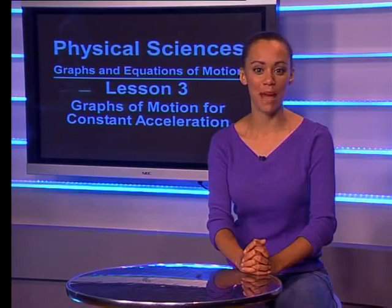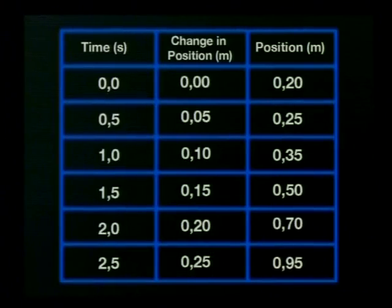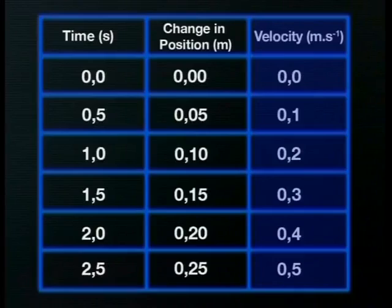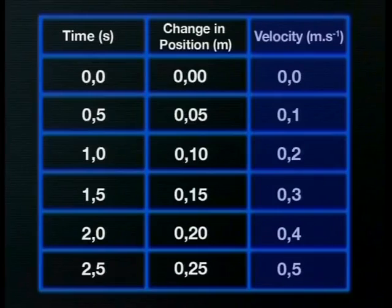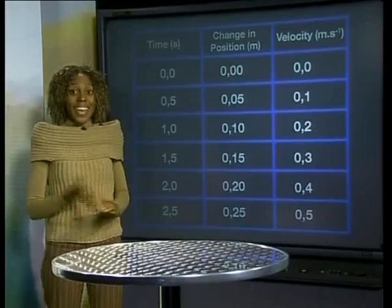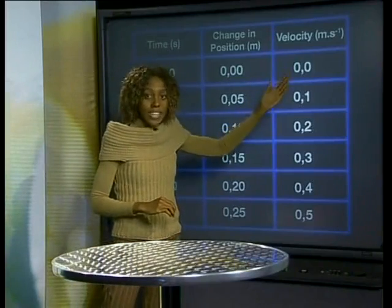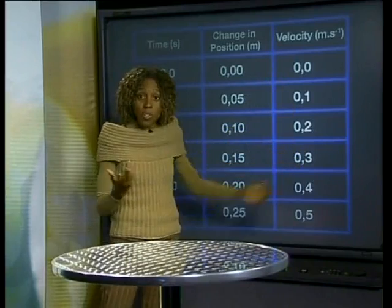So let's see how Nelly uses the table to calculate the velocities of the trolley. Can you calculate the velocity for each of the five half-second time intervals? Take a look at my results. For the first 0.5 seconds, the velocity is 0.1 meters per second. In the next time interval, the trolley's displacement increases, and so the velocity increases too. Here, it is 0.2 meters. Can you see that the velocity is increasing for each of the time intervals?